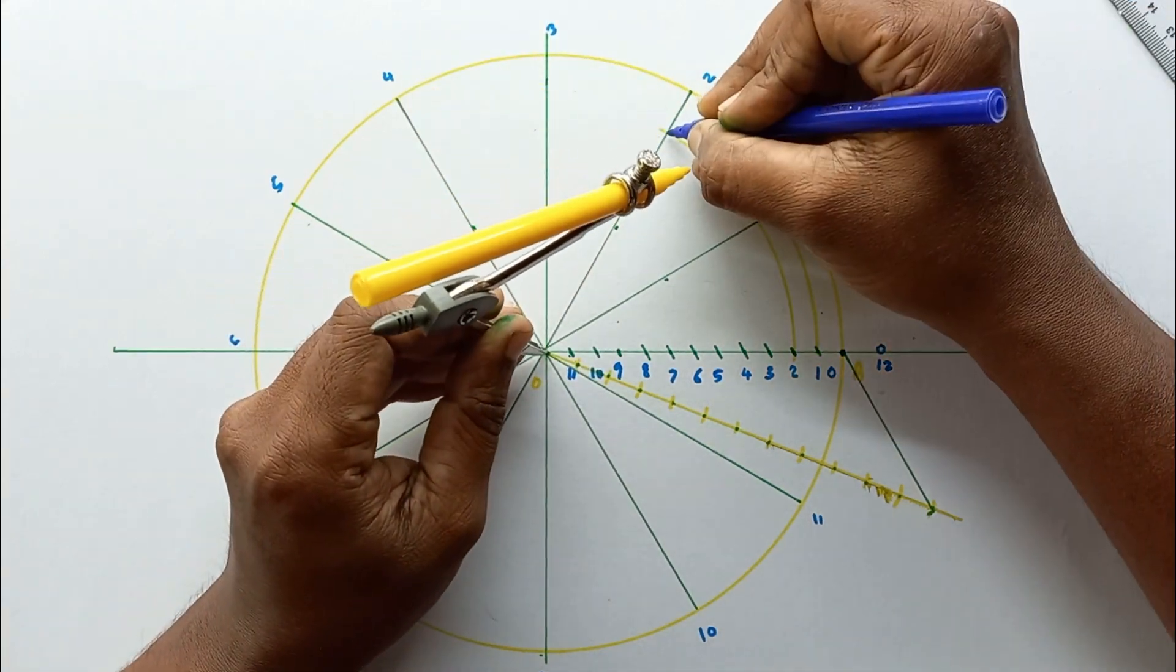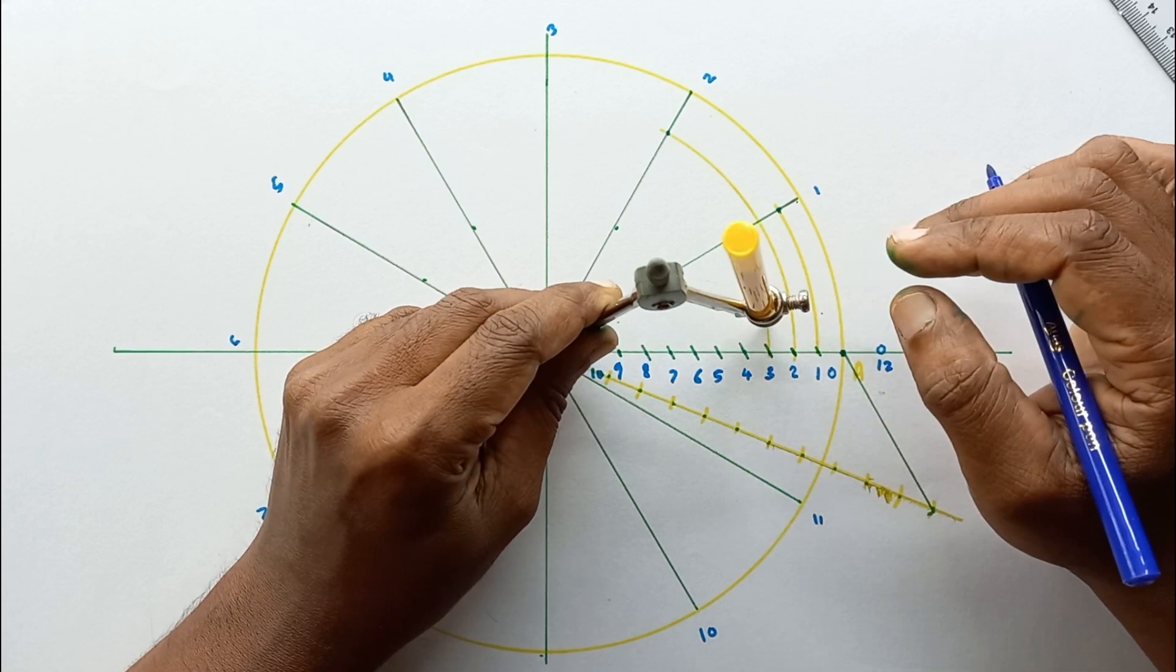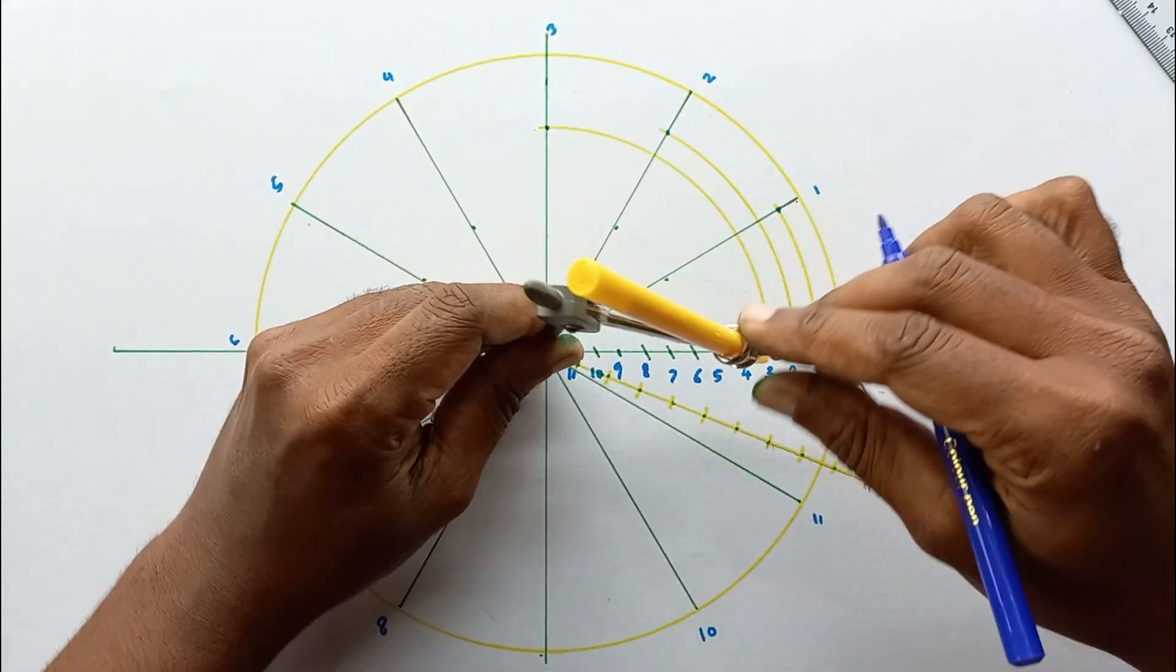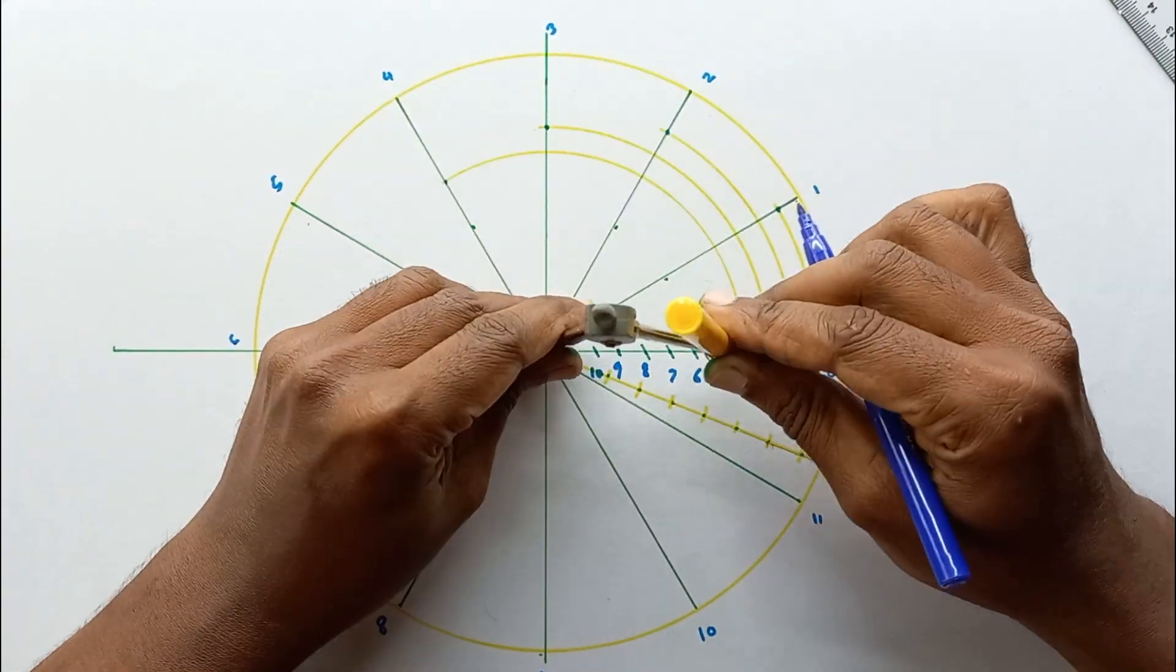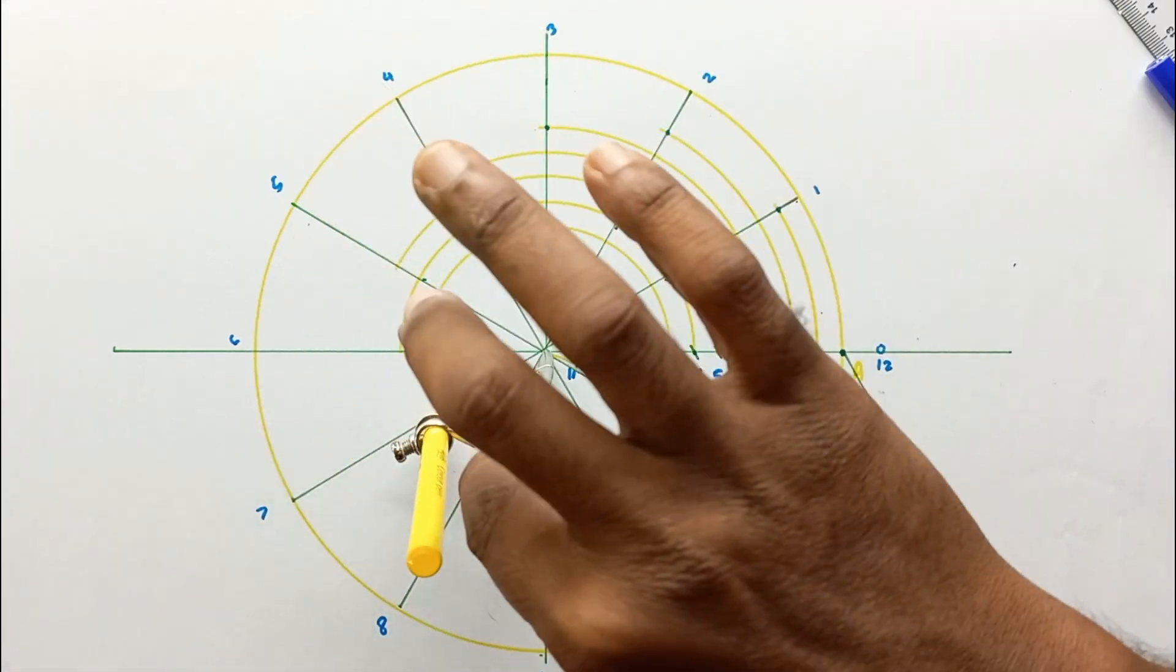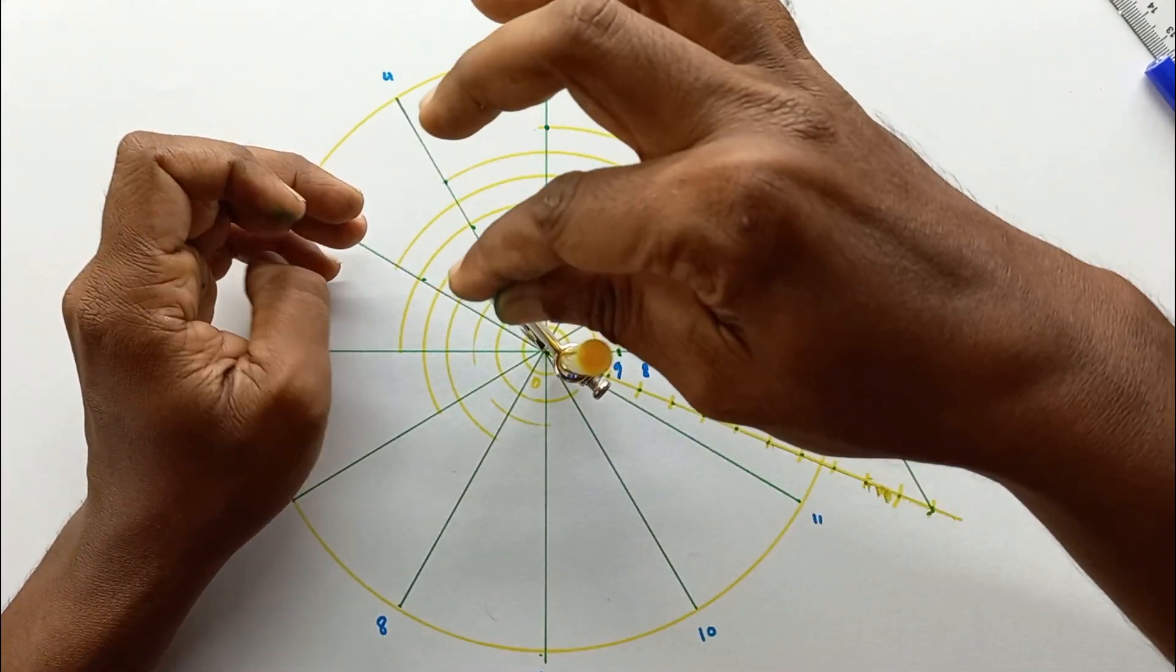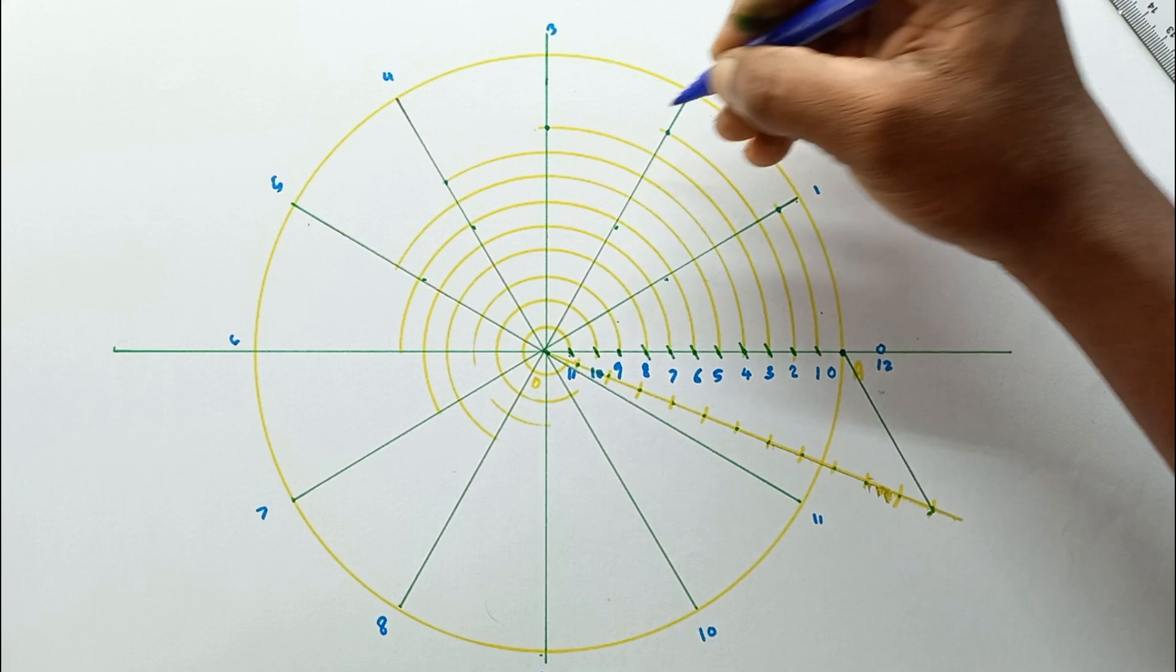Then take the length up to point three and mark this point on the third line. Continue this process. The 11th one and the 12th one is the center. Let's mark these points.